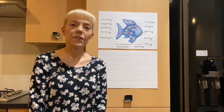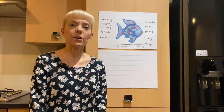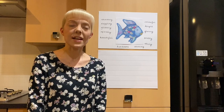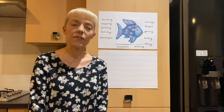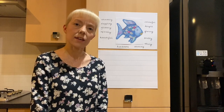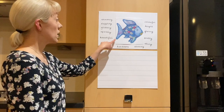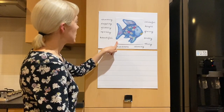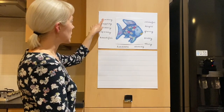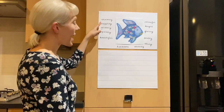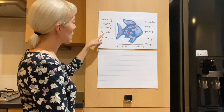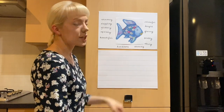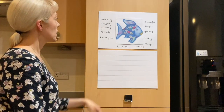Hello boys and girls. For Literacy today we're going to think of and write some words and sentences to describe what Rainbow Fish looks like. I've got a picture of Rainbow Fish up here and I've had a think and I've written lots of adjectives, which are describing words, to describe what Rainbow Fish looks like. I'll read some to you.